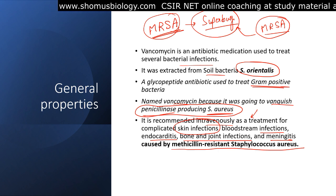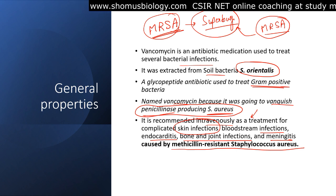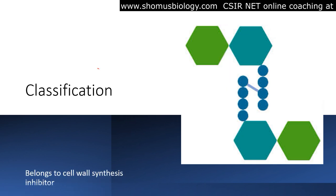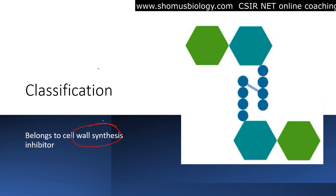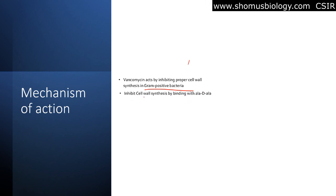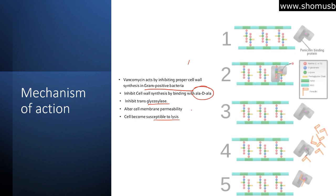For GI infections, UTIs, and respiratory tract infections, we have different antibiotics to work with; if they fail, then we use vancomycin. This antibiotic is mostly active against gram-positive bacteria. Vancomycin belongs to the cell wall synthesis inhibitor class — a beta-lactam antibiotic. Its mechanism of action is to inhibit proper cell wall synthesis of gram-positive bacteria by binding to alanine, inhibiting the transglycosylase reaction, and altering cell membrane permeability, making the cell susceptible to lysis and death.